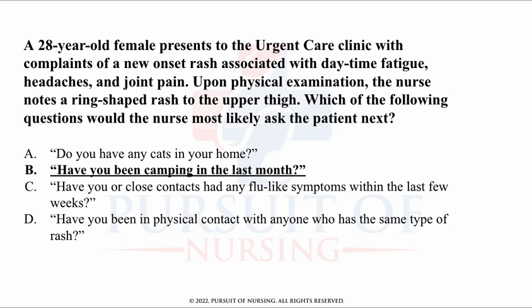The correct answer is: Have you been camping in the last month? The nurse should ask questions to assist in identifying Lyme disease. You're going to see that ring-shaped rash and think Lyme disease. Lyme disease is a multi-system infection that results from a tick bite. The rash is ring-like in shape and can occur three to four weeks after the bite. It is commonly seen in the groin, buttocks, under the armpits, on the trunk, and the upper arm and legs — any area exposed while hiking or camping where you could get a tick bite.